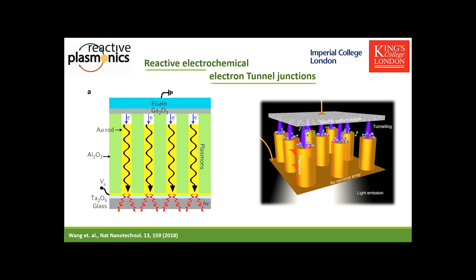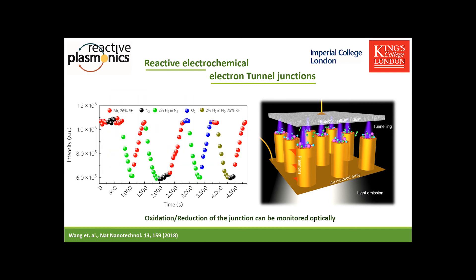To test the performance of this device electrochemically, given the high density of hot carriers in these tunneling gaps, we applied the molecule poly-L-histidine, which can be induced to undergo oxidation or reduction depending on its gaseous environment. We can see how the poly-L-histidine can be induced to oxidize and reduce depending on whether we provide oxygen or hydrogen in the system. The intensity of light emitted from the plasmon decay can vary by up to one order of magnitude depending on the state of the poly-L-histidine in the junction.